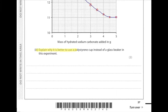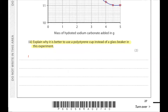Explain why it is better to use a polystyrene cup instead of a glass beaker in this experiment. Polystyrene cup is an insulator and this reduces the thermal heat energy coming in from the surroundings, so temperature decreases will be closer to the true value.